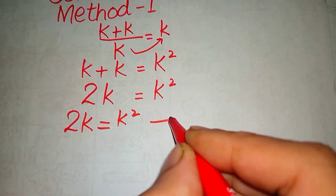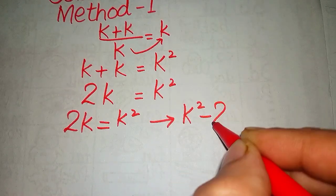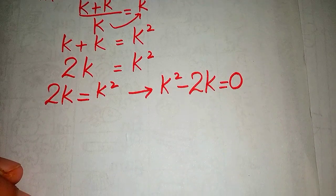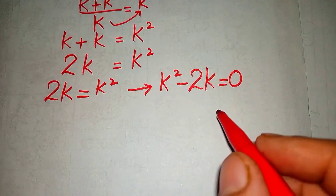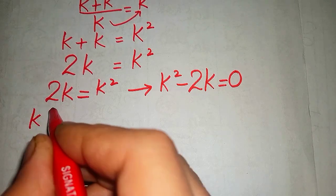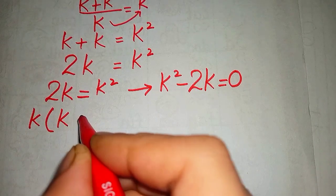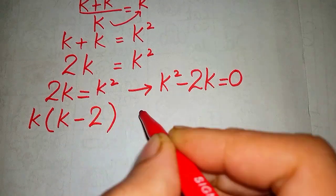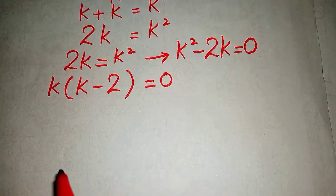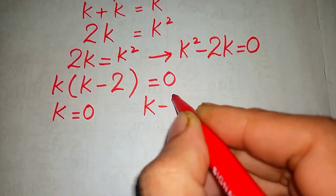When we rearrange this equation, we can write it as k squared minus 2k equals 0. Now we can see that k is a common factor in our equation, so we factor it out as k times (k minus 2) equals 0.